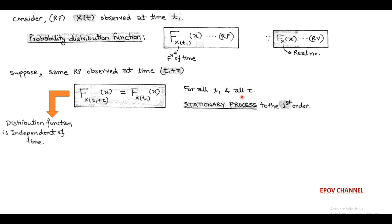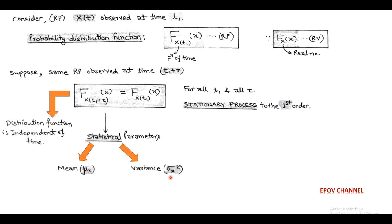This stationary process of first order can be described mathematically in terms of statistical parameters such as mean mu and variance sigma squared. Here, both parameters are also independent of time. So, in case of a stationary process of first order, the statistical parameters are mean and variance.